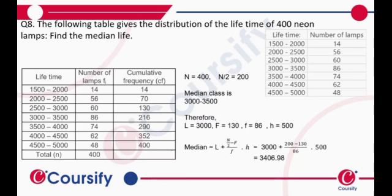The following table gives the distribution of the lifetime of 400 neon lamps. Find the median life. We have to find this from the given frequencies. The frequencies add up to give us 400.